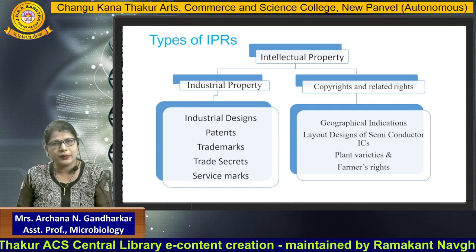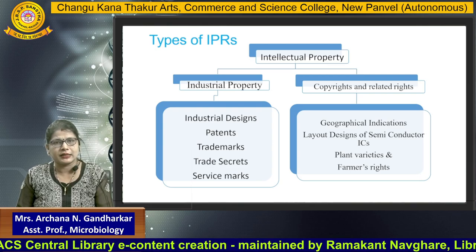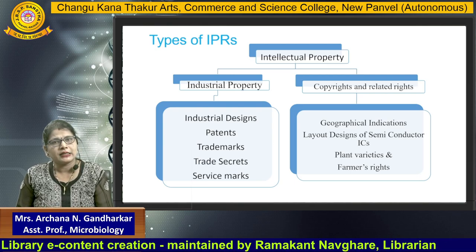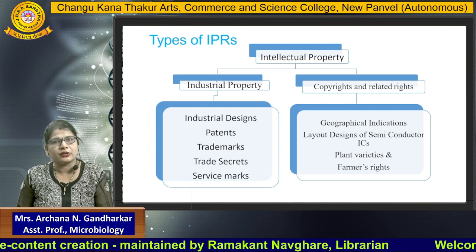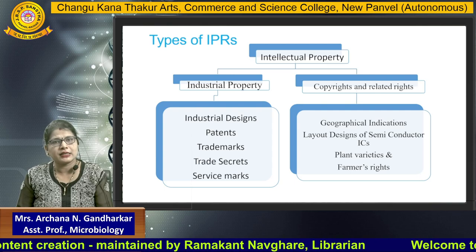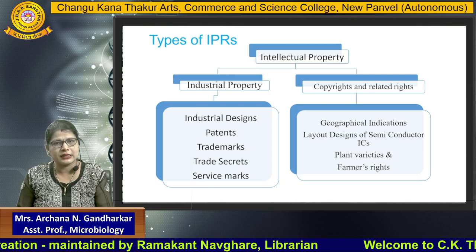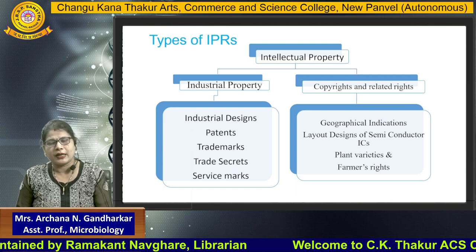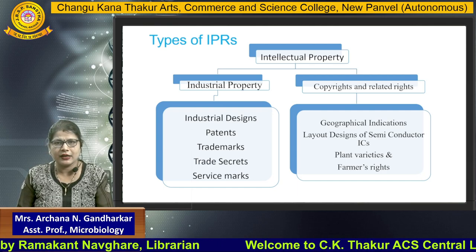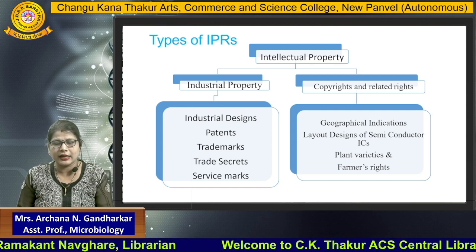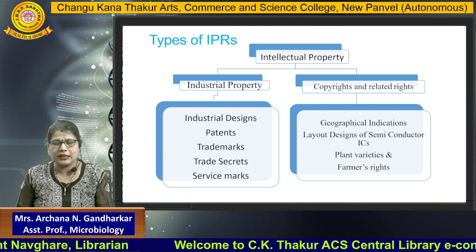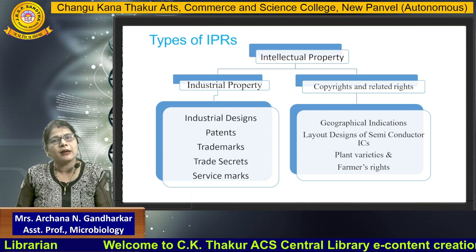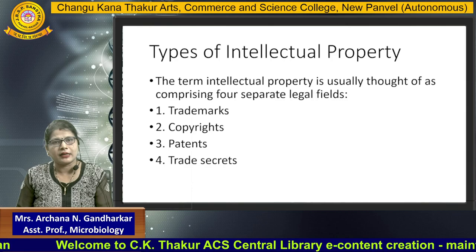There are two types of intellectual property: one is industrial property and the second is copyright and related rights. Industrial property is classified into industrial design, patent, trademark, trade secret, and service marks. Copyright and related rights cover geographical indication, layout design of semiconductors and ICs, plant variety, and farmer rights.